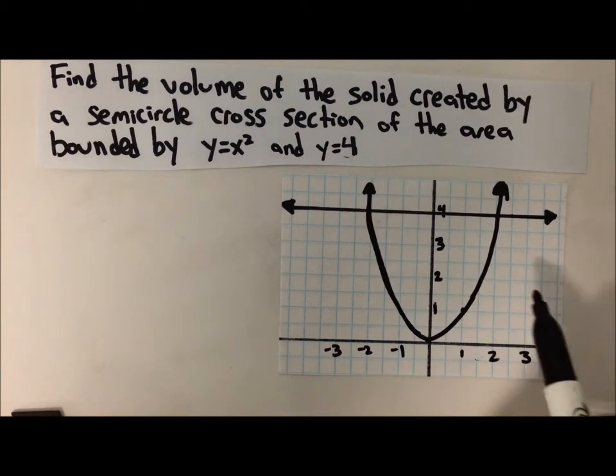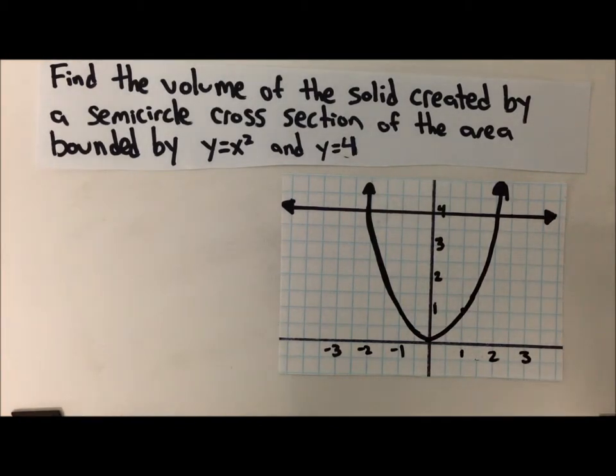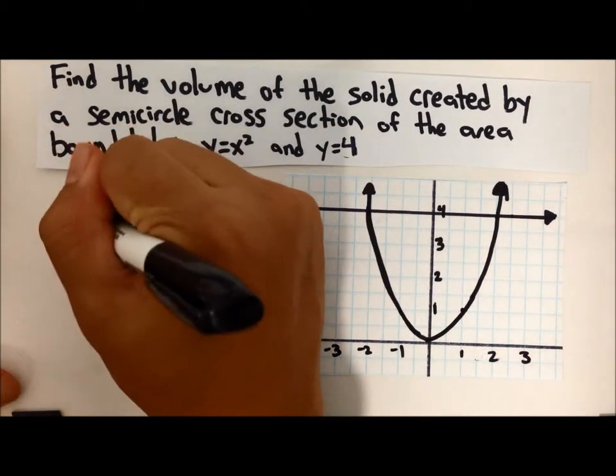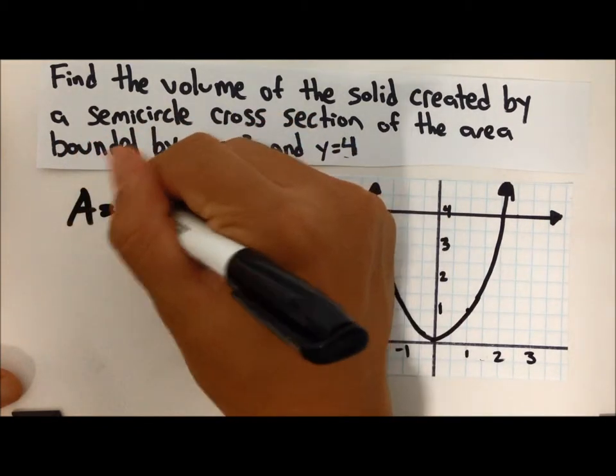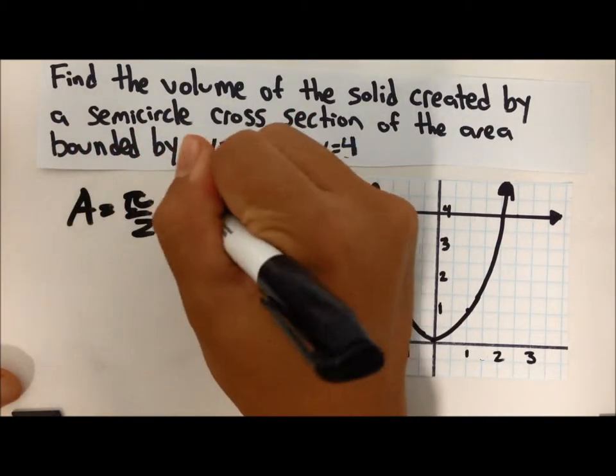So this is the graph, and in order to solve this problem, we need to know the formula a equals pi over 2 r squared.